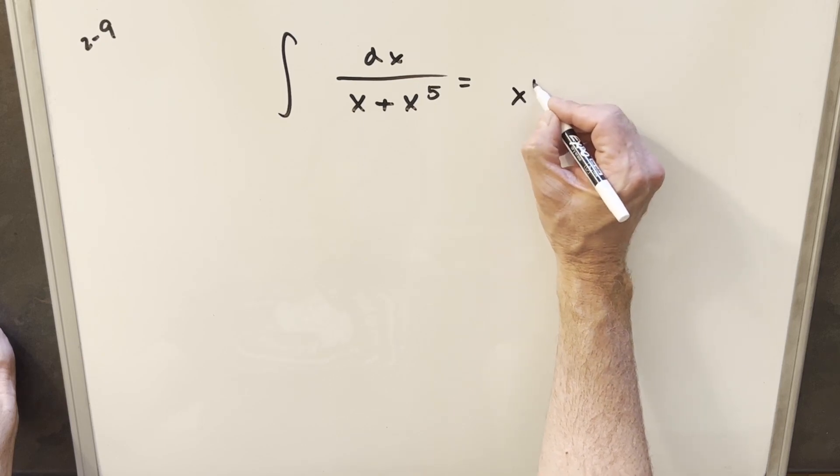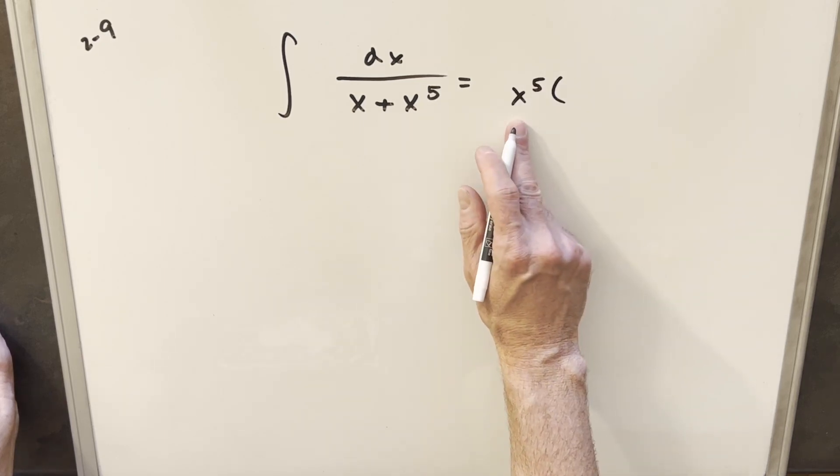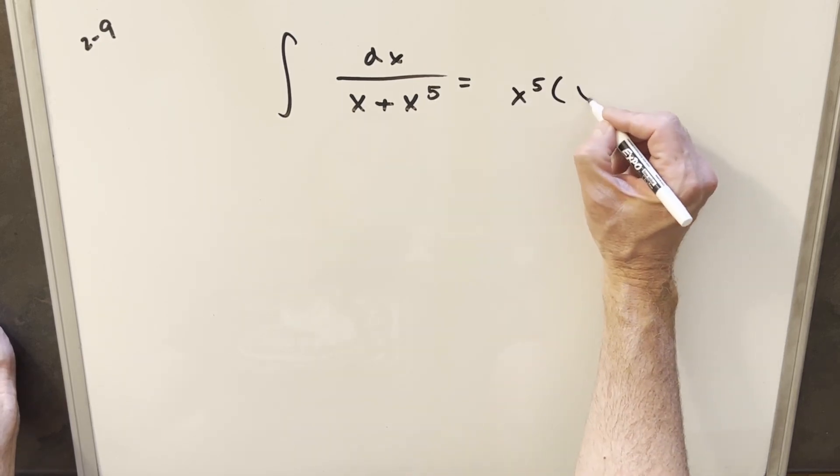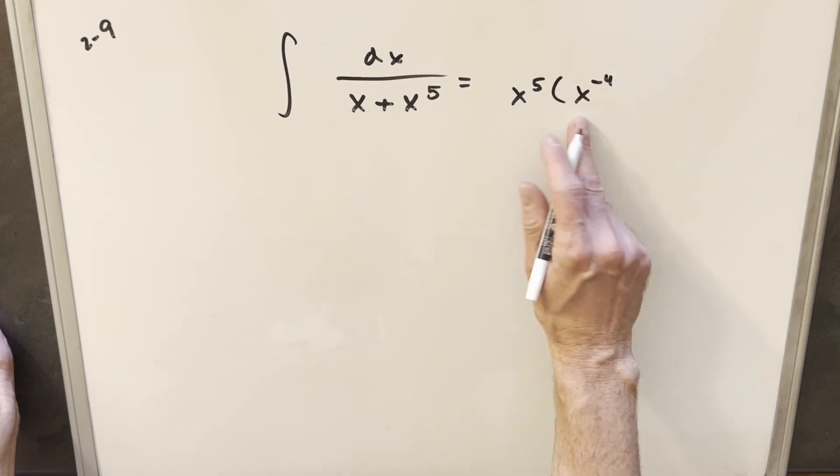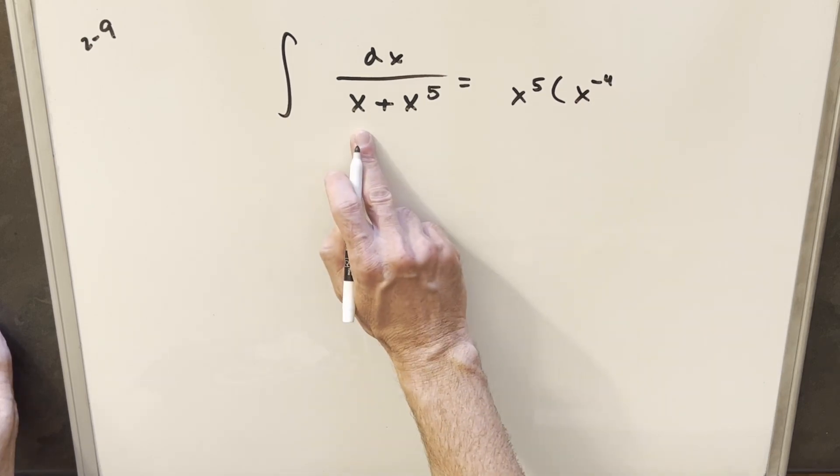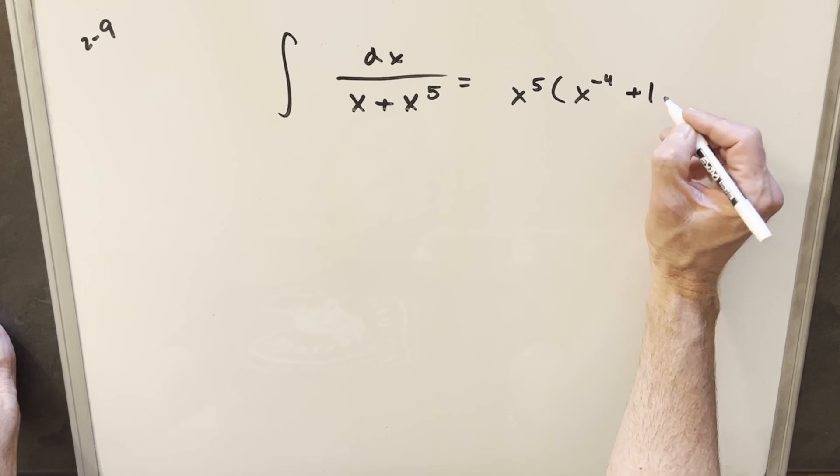So if I do that, in our denominator we're going to have x to the fifth factored out. This first term is going to become x to the minus fourth. Notice multiplying that together is just x. This becomes plus one.